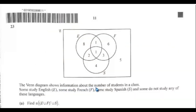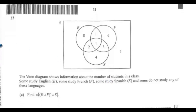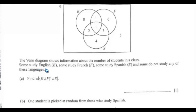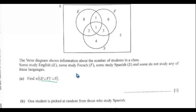The Venn diagram shows information about students in a class. Some study English (E), some study French (F), some study Spanish (S), and some study none of these languages. For part a, find the number of people in the set for Spanish. The number of students studying Spanish = 2 + 1 + 3 + 3 + 6 + 4 ... wait — 2 + 1 = 3, plus 3 = 6, plus 4 = 10.